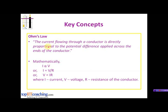Ohm's law. This law was proposed by the scientist George Simon Ohm. It states that the electric current flowing through a conductor is directly proportional to the potential difference applied across the ends of the conductor. So mathematically, as per Ohm's law, we can write that I, that is the current, is proportional to V, that is the potential difference or the voltage. So I is equal to V upon R, where R is a constant known as the resistance of the conductor.